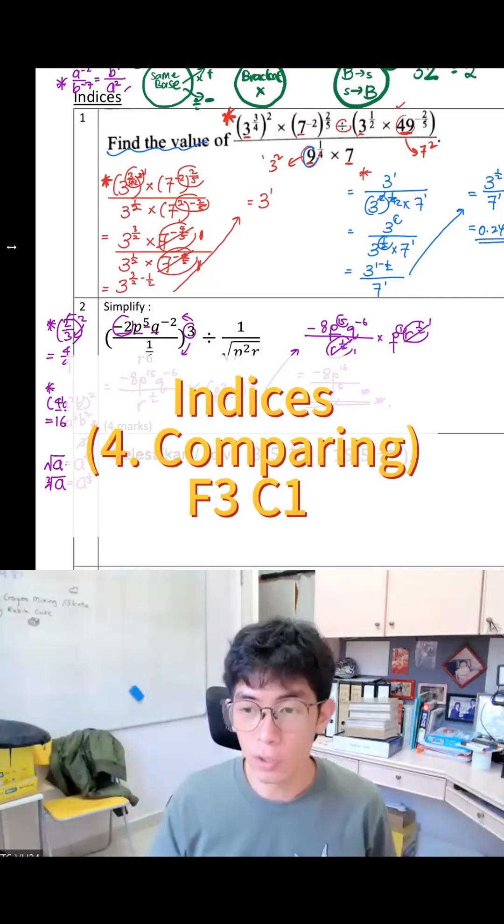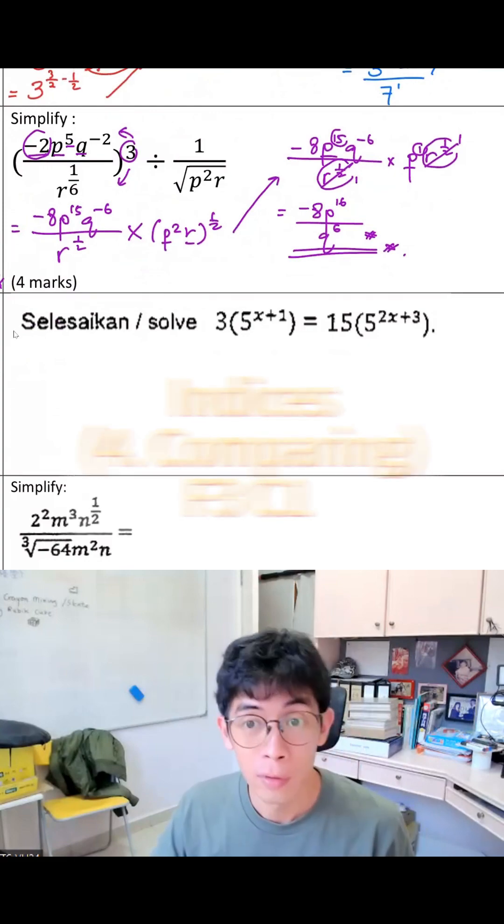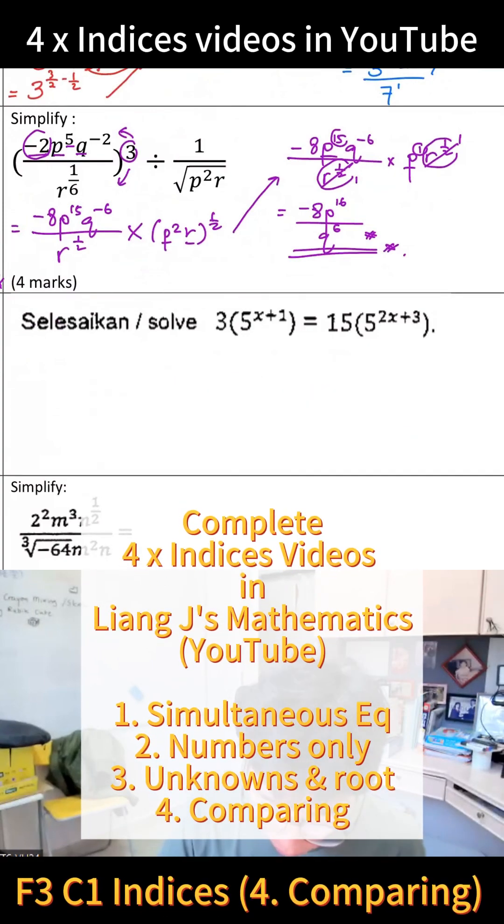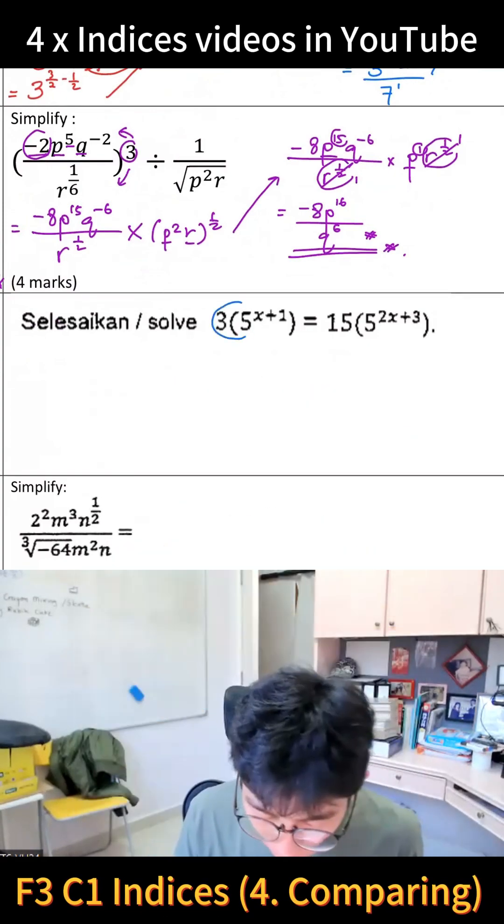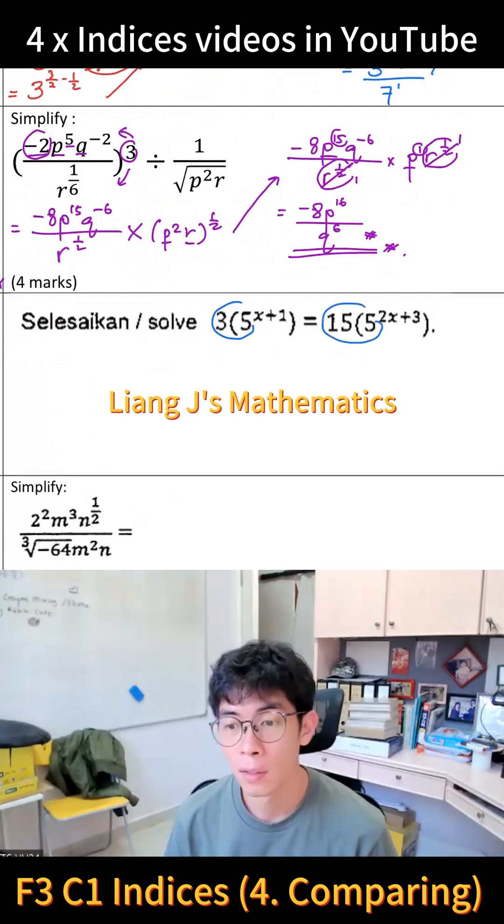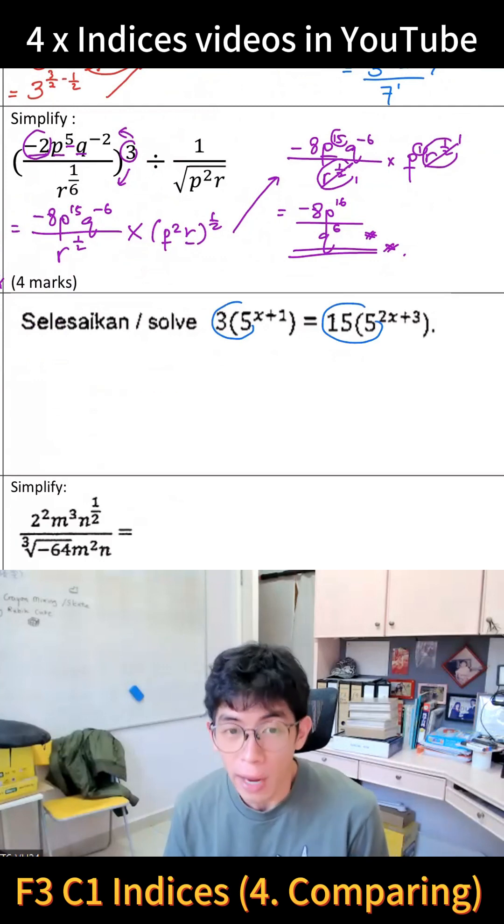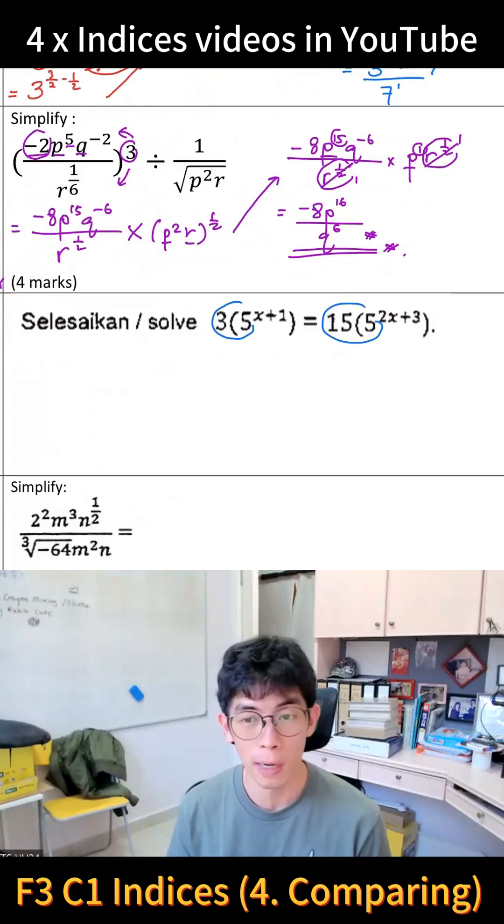Okay, so I'm going to do some guessing. Y'all let me know whether you did this error or not. Did anyone multiply this together and make it like 15 power x plus 1, and then 75 power 2x plus 3? Anyone did this?